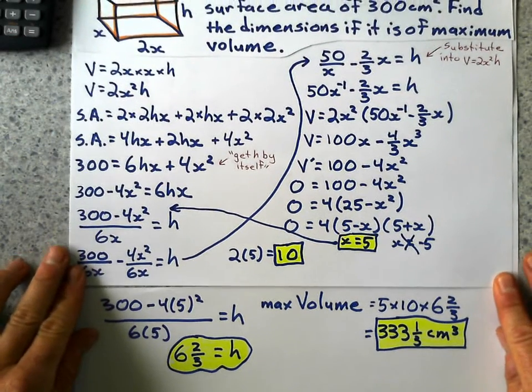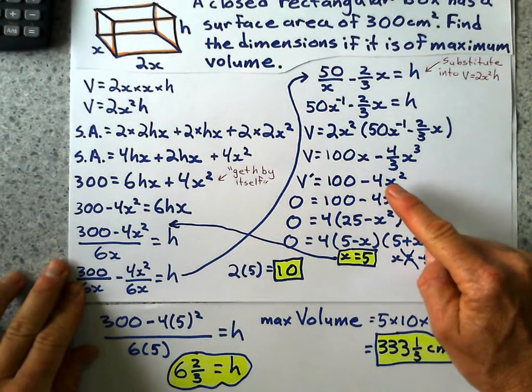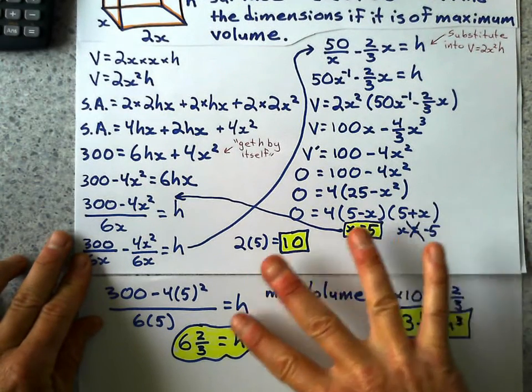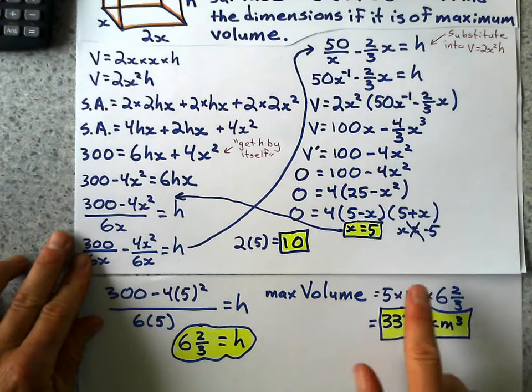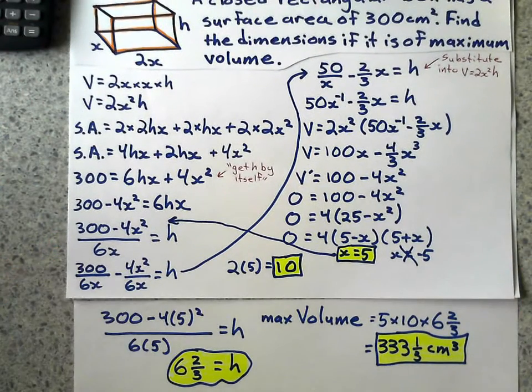All right. So there's the problem in its entirety. It's a big one. It's a lot of algebra until we get to the first stage of calculus here. Differentiate. Set it to zero. Solve for three dimensions. And then, of course, multiply those to get the volume. All right. Over and out. Thanks for watchin'.